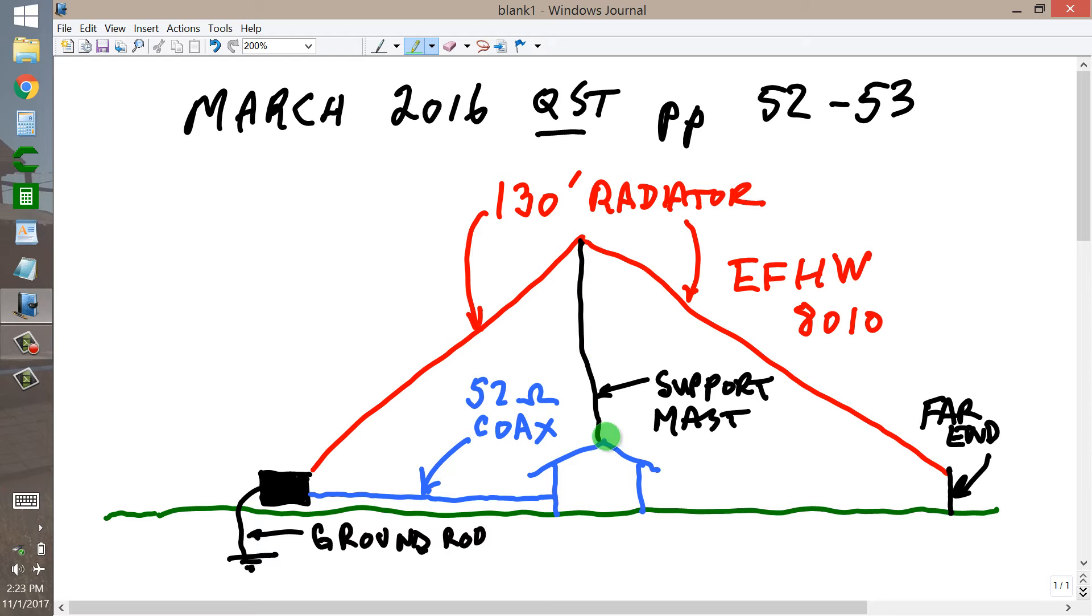Put a support mast up high enough so that 130 feet of wire would fit down to some far end support, like maybe a 10 foot wooden stake pounded into the ground, or possibly even a fence post or something like that, as long as it's insulated from it if it's metallic. So this far end is free, it's not grounded.